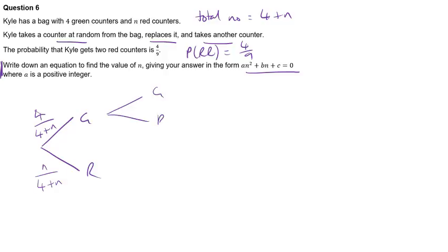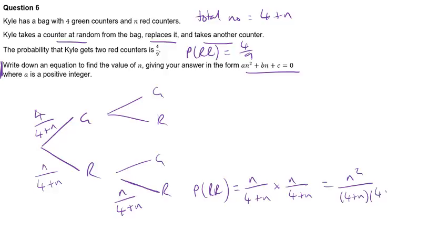And then the second one again can be green or red. Now all we're interested in here is the probability of red then red. So the probability here will be the same as it was before because the counter was replaced. They're independent. So to find this probability, we need to multiply these two together. And multiplying out the brackets, so this is the probability of getting two reds algebraically using that n to represent the red counters.